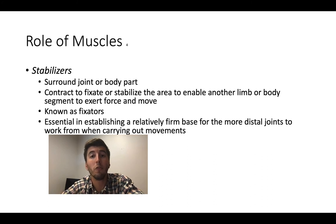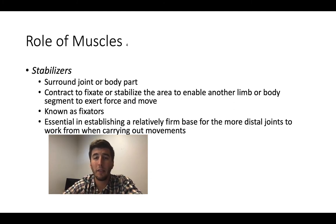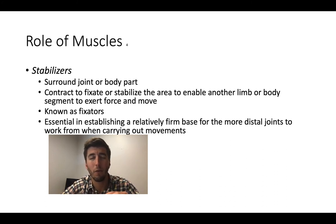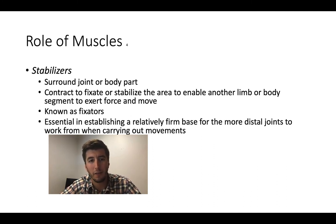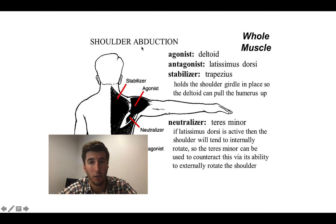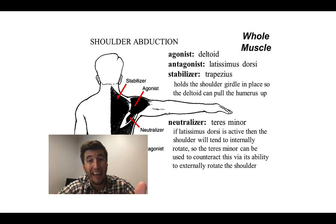Another predominant role of muscles is to serve as stabilizers. These muscles surround the entirety of a joint or body part and either contract to fixate or focalize a movement force, or they stabilize one region of the body so that another region can change planes — these are often referred to as fixators. For example, during shoulder abduction — movement away from the body in the frontal plane — the primary agonist is the deltoid muscle, the group actually inducing the movement change.